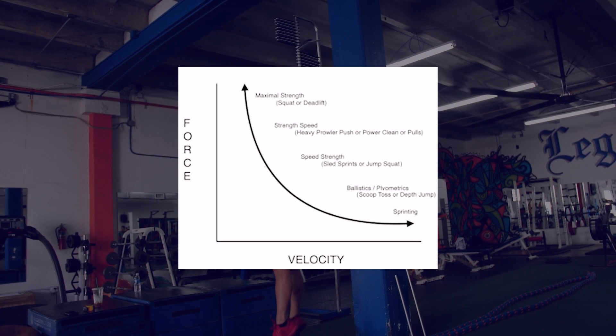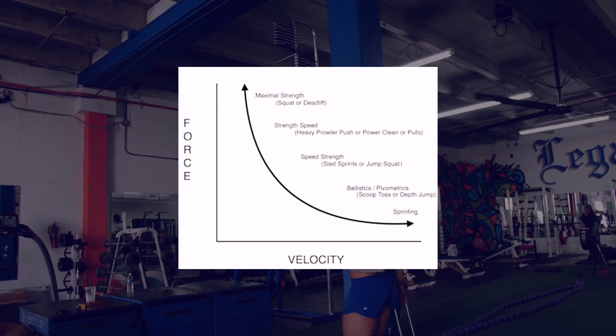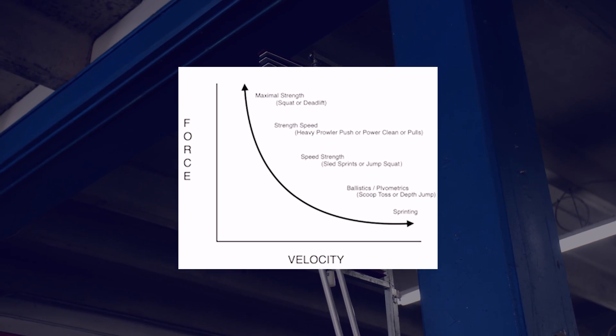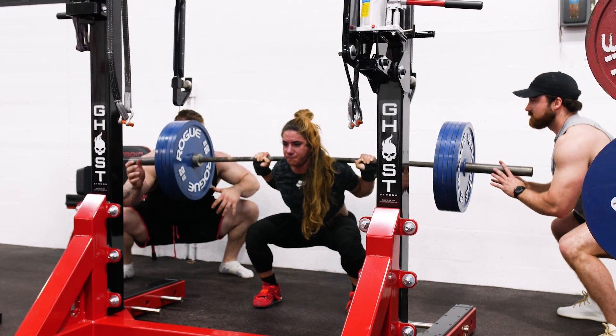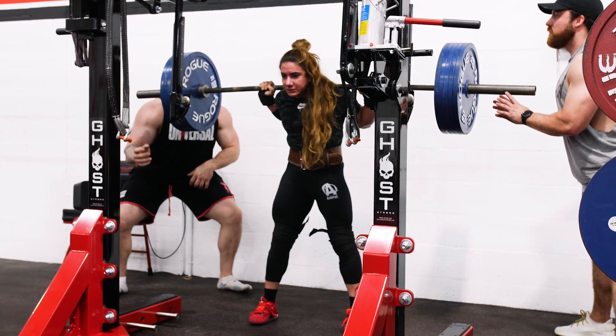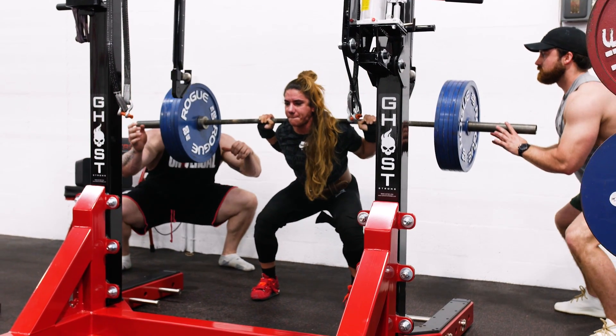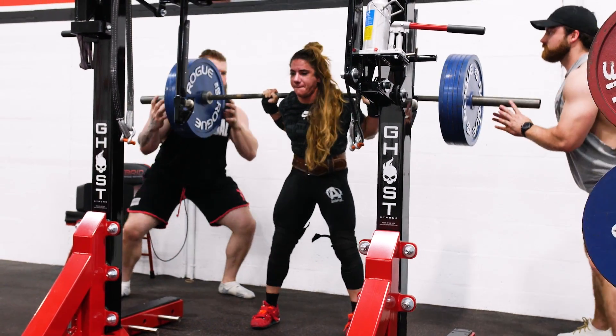This force-velocity relationship forms a curve, which is important to understand if you want to develop strength. Light weights can be moved very fast, but because of the way muscle contraction works, the amount of potential force a muscle can produce in a fast contraction is relatively low. Heavy weights cannot be moved nearly as fast, so force potential is much higher. There is an inverse relationship between muscle force and muscle velocity: as force goes up, velocity goes down, and vice versa. That is the force-velocity curve.